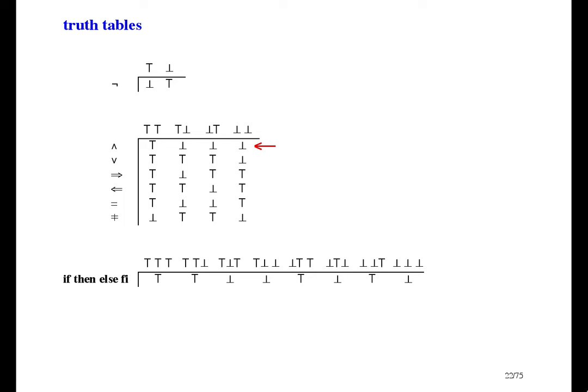This row shows why conjunction is called AND — you see that the result is true just when both the left conjunct and the right conjunct are true. And this row shows why disjunction is called OR: the result is true when either the left disjunct or the right disjunct is true, and false only when they're both false. If I could remember to call them top and bottom, which is better because it's independent of application, then I should say that conjunction gives the minimum of its two operands, and disjunction gives the maximum of its two operands.